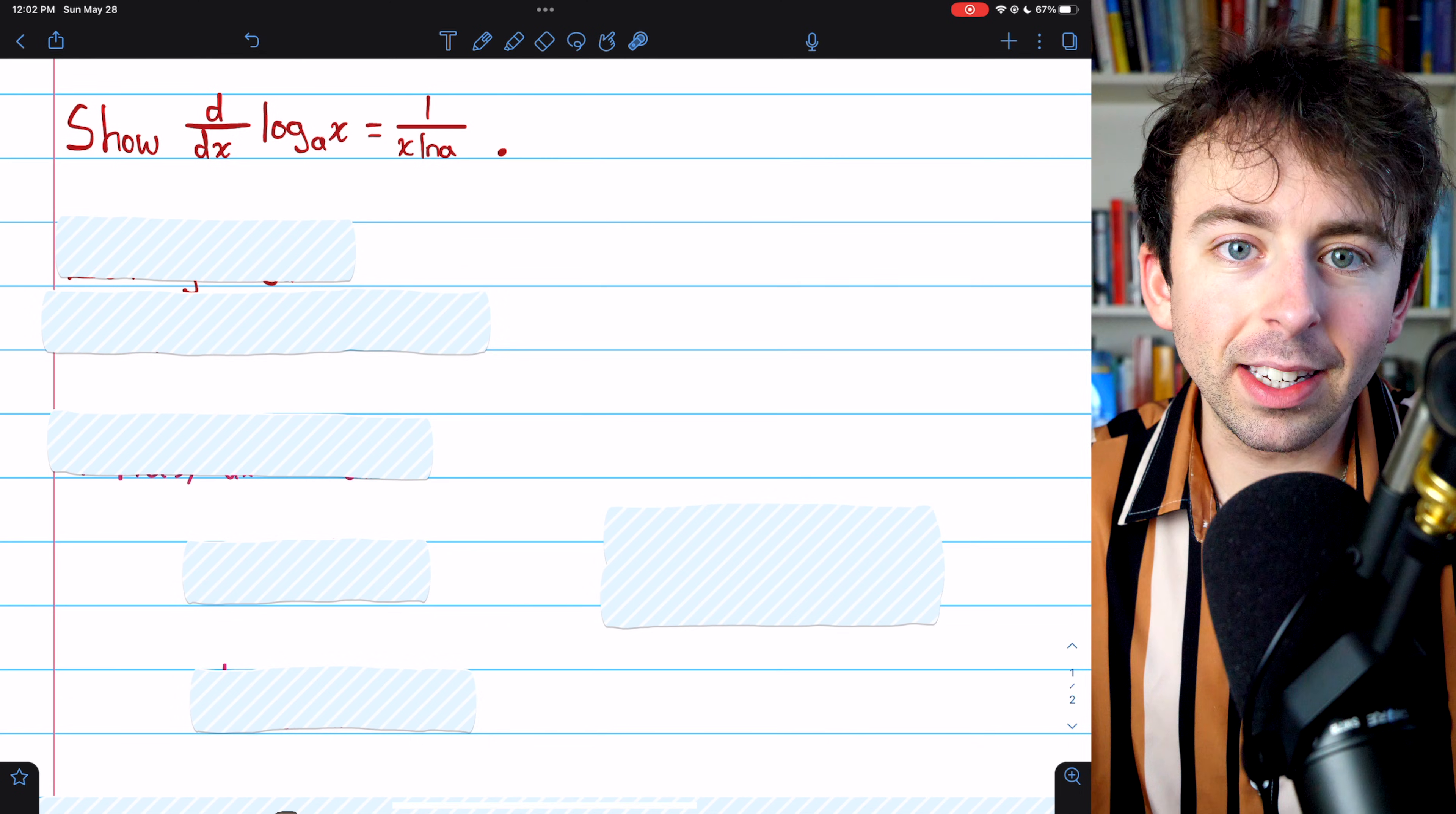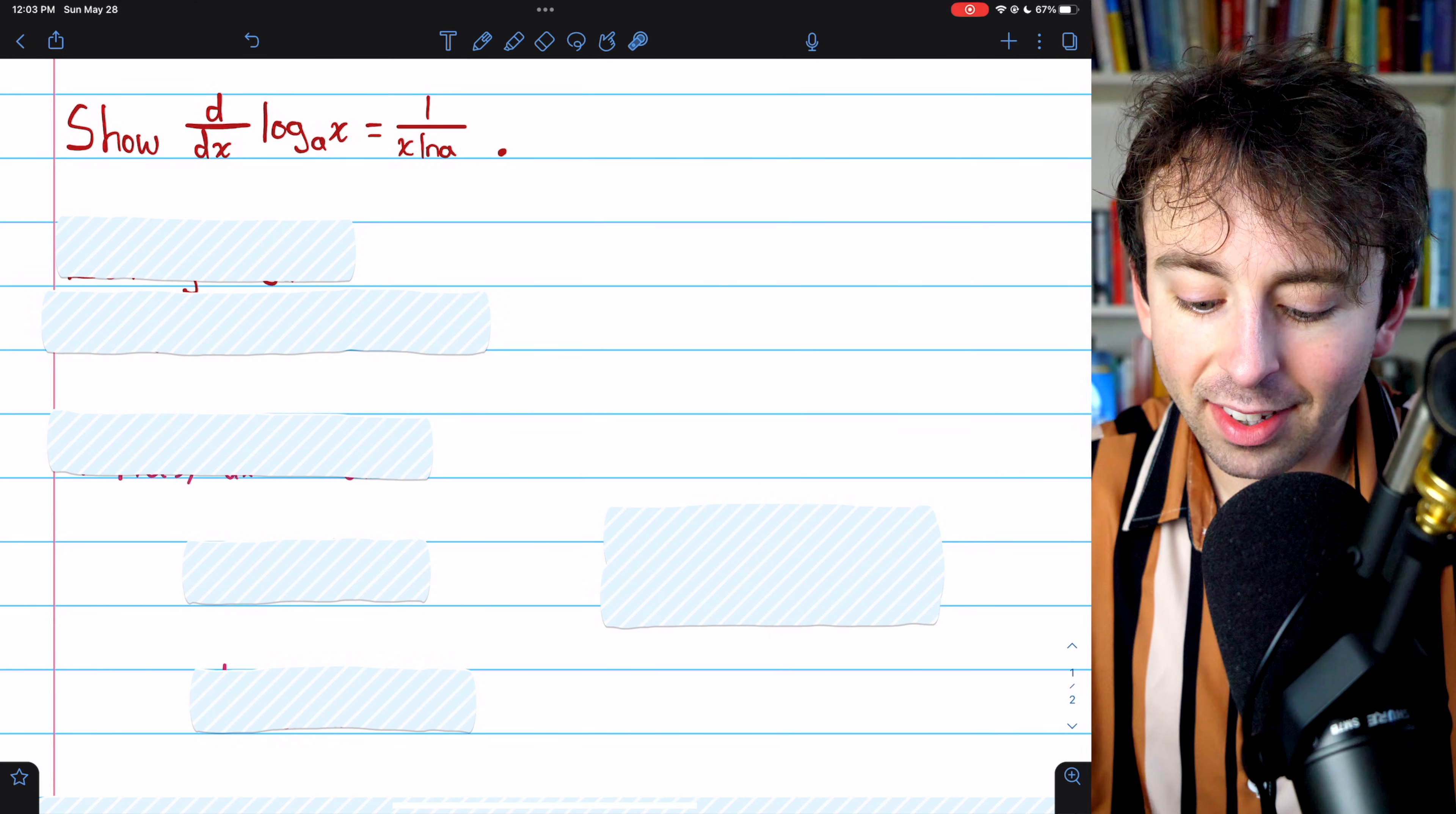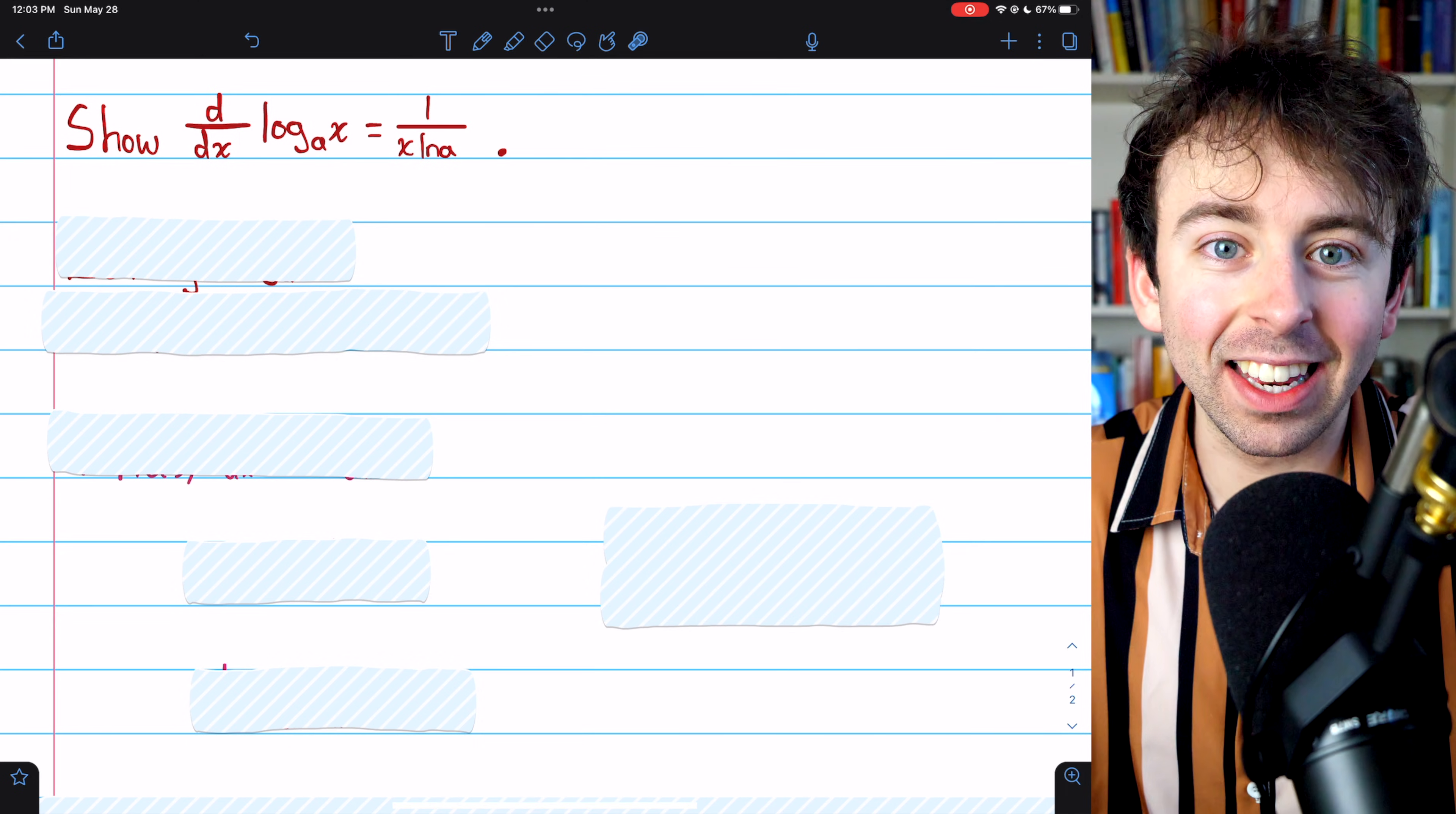Now that we know how to use implicit differentiation—link in the description if you need to review that—we'll be able to show that the derivative of log base a of x is equal to 1 over x times the natural log of a. Let's get into it.